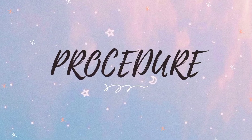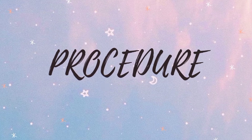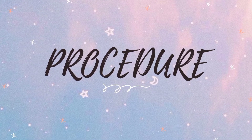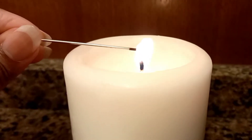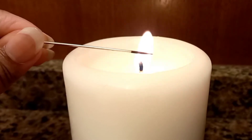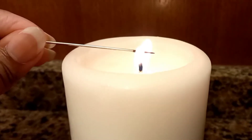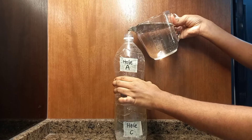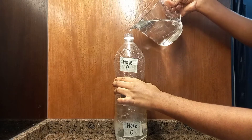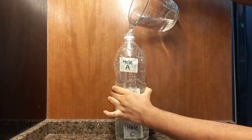Now, let's check out the steps to conduct the experiment. Firstly, we're going to heat the needle over the flame and once it's heated, make three holes horizontally on the plastic bottle. Then, we need to tape those holes and label it. After that, add water and food coloring in the bottle.